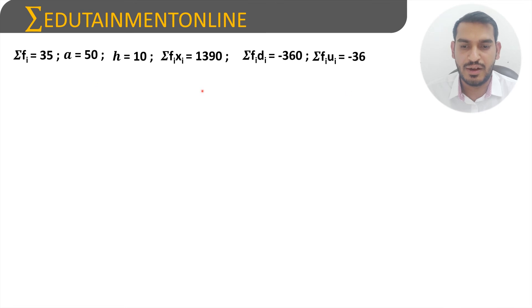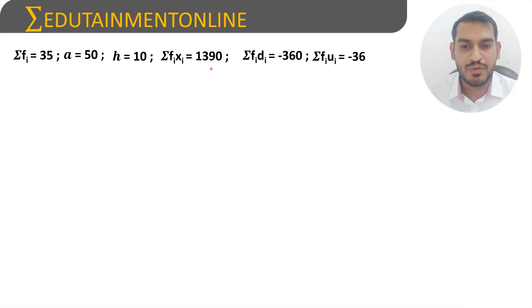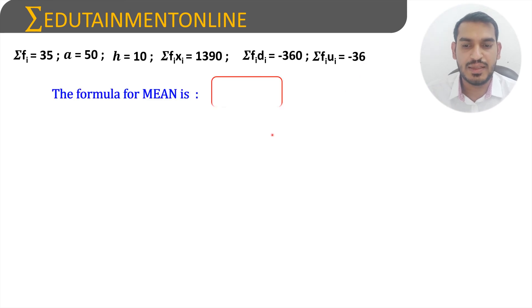Summarizing all values needed for the formulas: Σfi = 35, assumed mean a = 50, h = 10, Σ(fi·xi) = 1390, Σ(fi·di) = −360, and Σ(fi·ui) = −36.